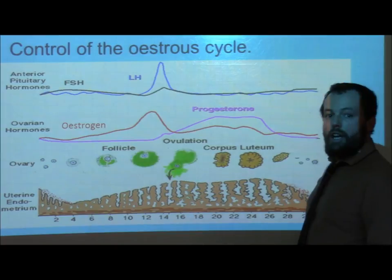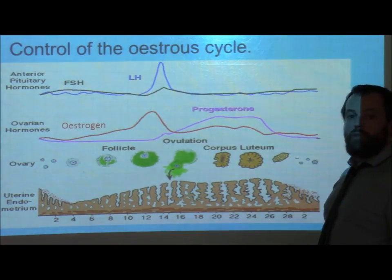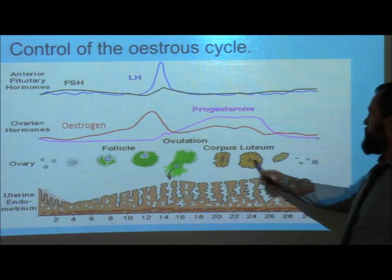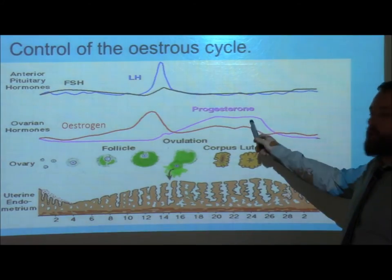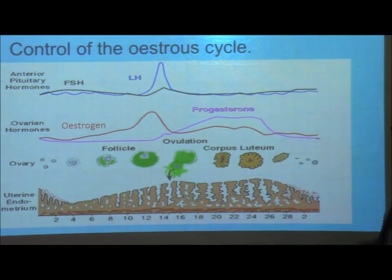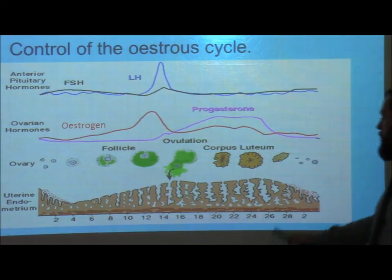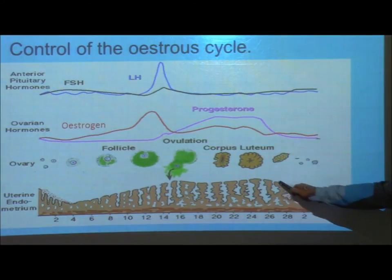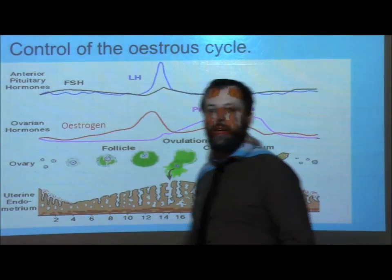If fertilisation and implantation into the uterus lining do not happen, then the corpus luteum starts to break down, which means that the progesterone levels start to drop, the uterus lining is not being maintained, and it starts to be shed towards the end of the cycle — and then the whole cycle starts up again.